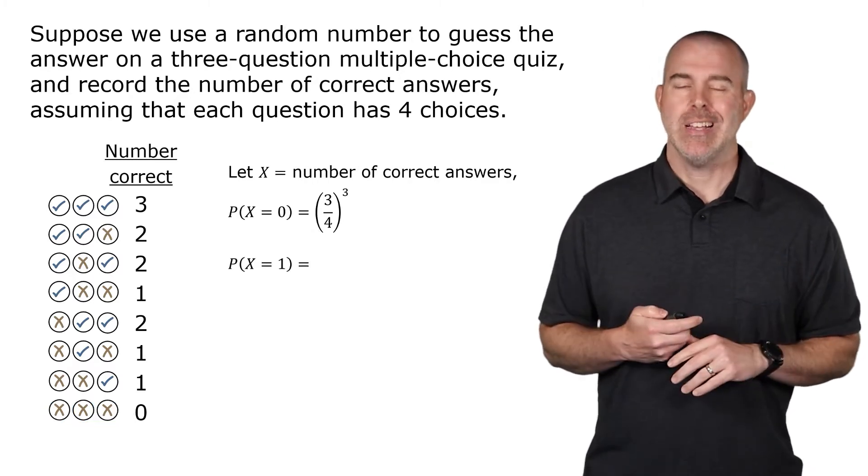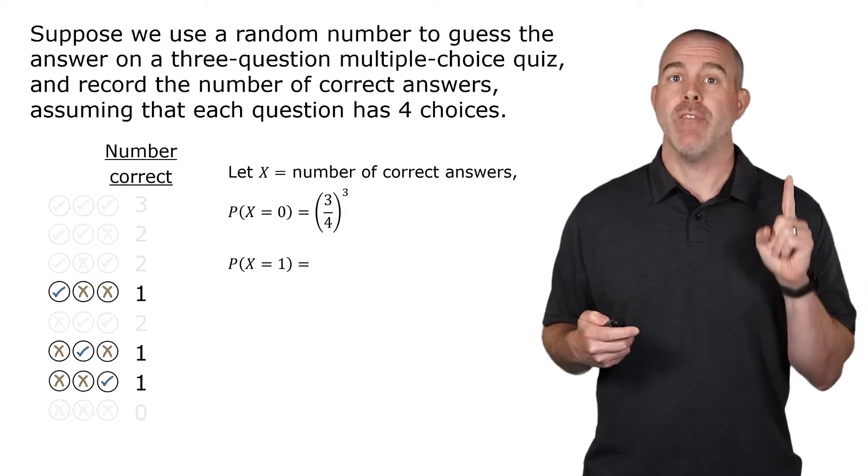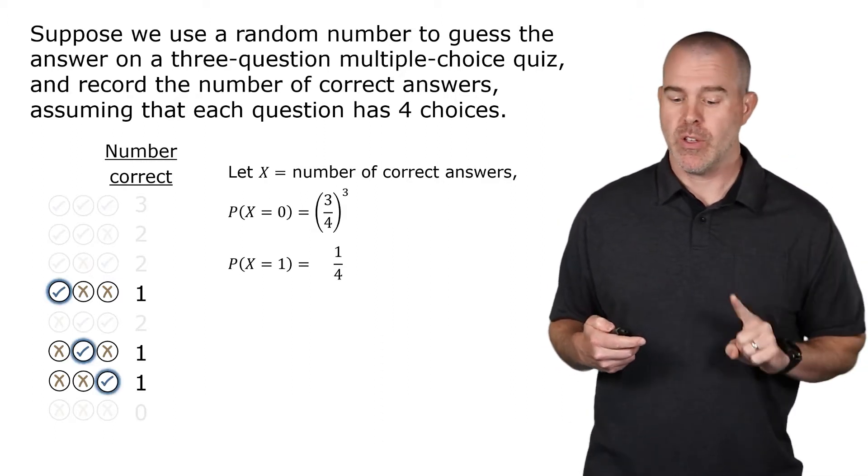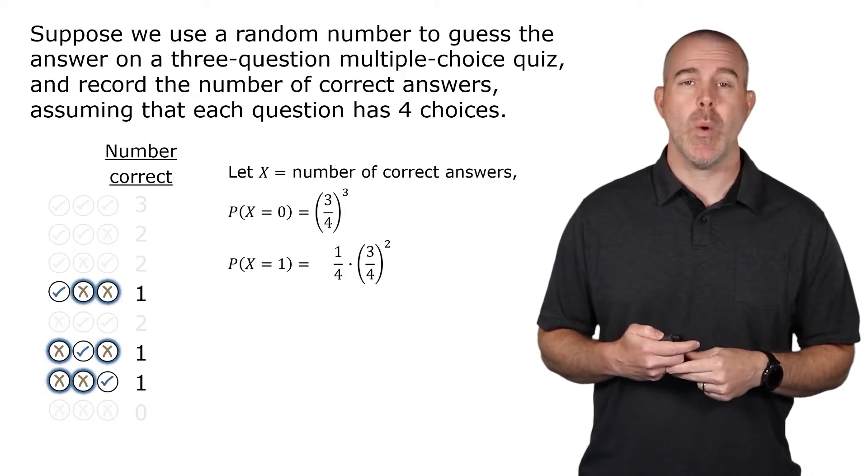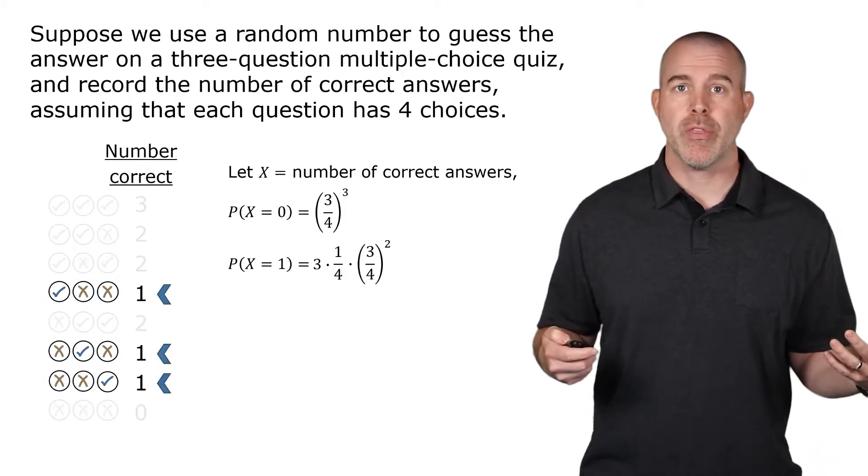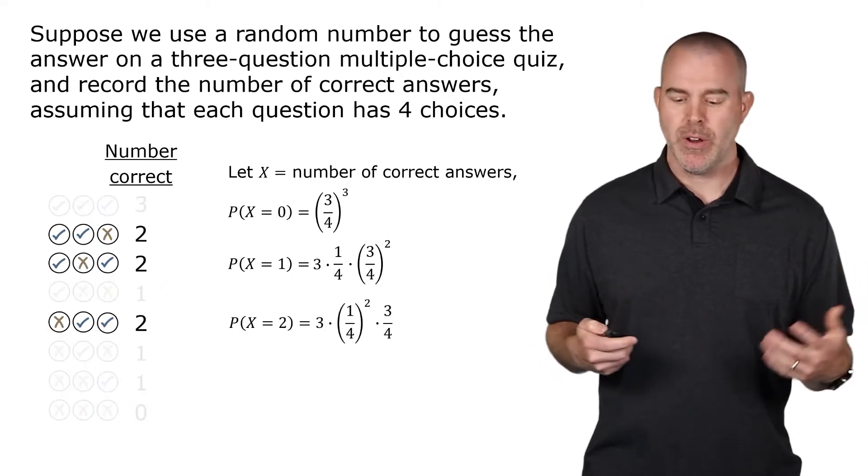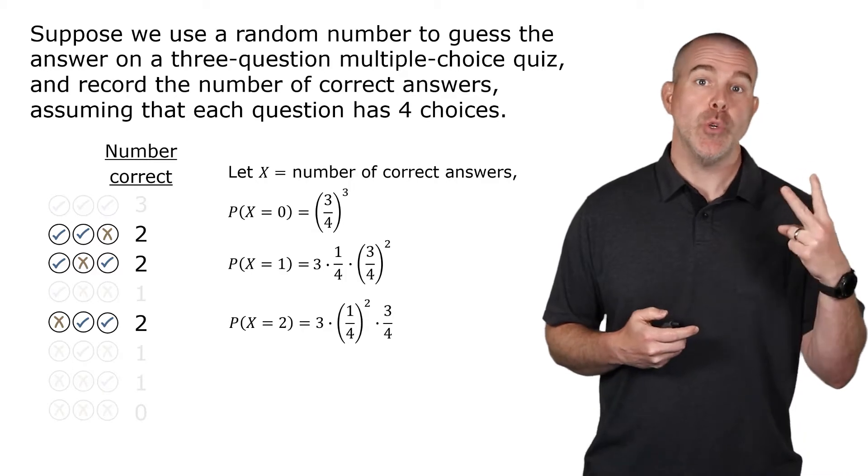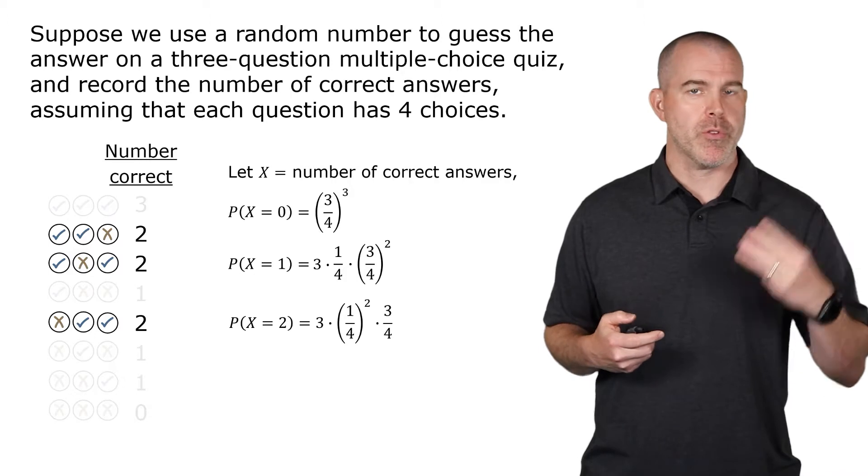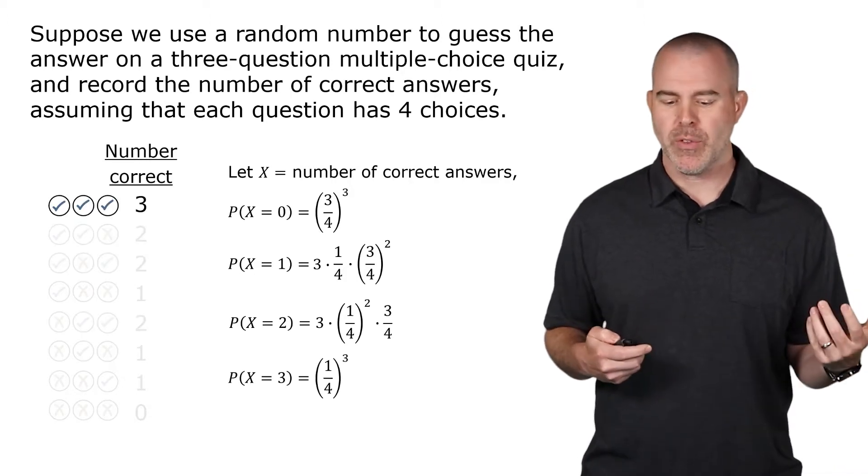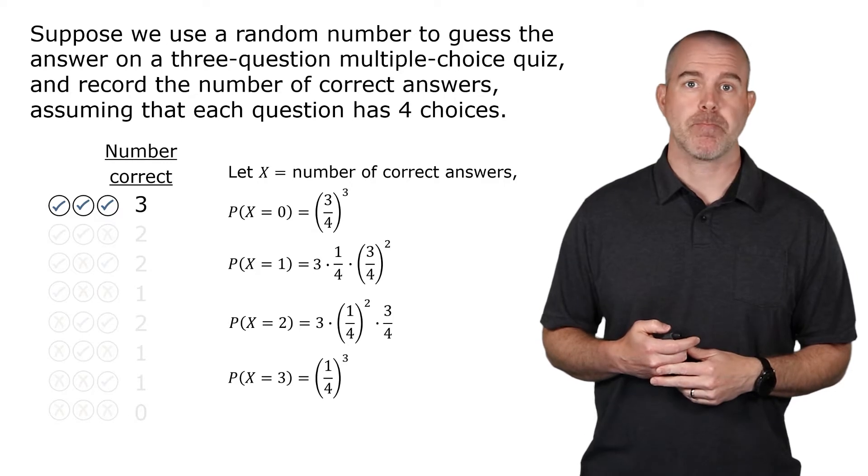One is a little more complex. So for one, the issue is there are three of them, but all three have one correct. So that would be one-fourth. And then they have two incorrects. That would be three-fourths squared. And then we'll just multiply by three because there are three of them. Two is similar. In this case, there are two correct ones, so it's one-fourth squared and then just three-fourths to the first. But again, there are three ways you can do this. And then for three, that would just be one-fourth cubed. All three are correct. Okay.